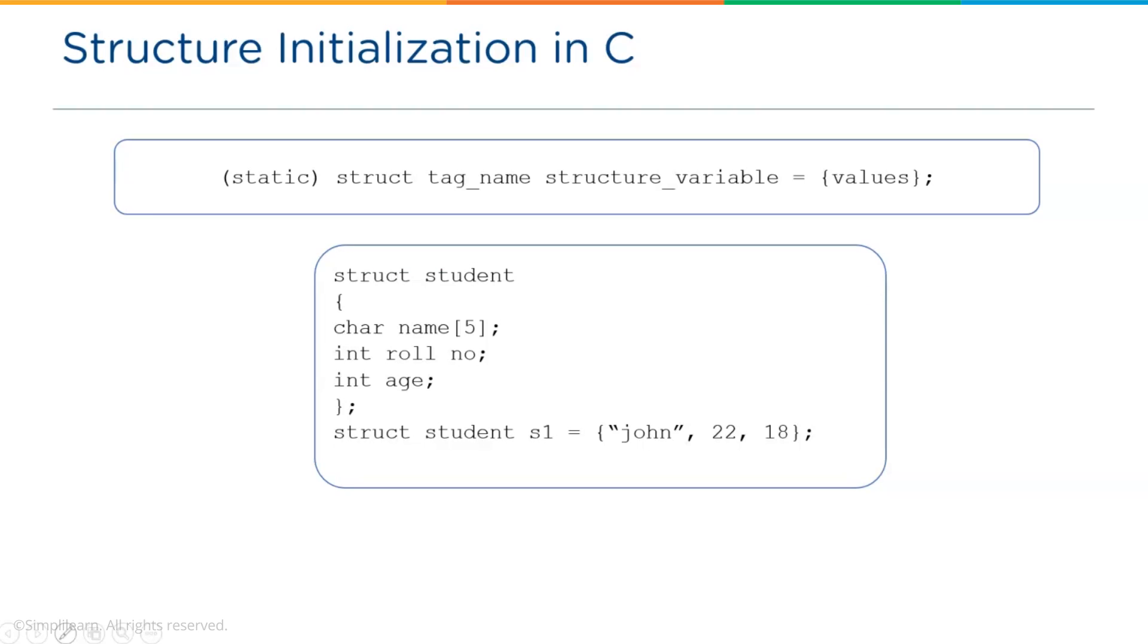In this particular example, name is John, the roll number is 22 and the age is 18. Now that we know how to declare and initialize structure variables in C, let's see how the structure elements are stored in the memory.